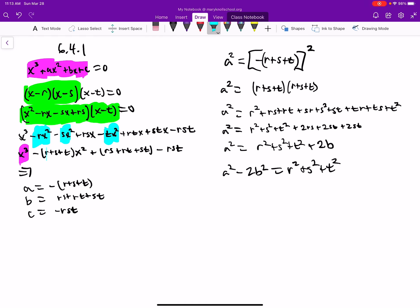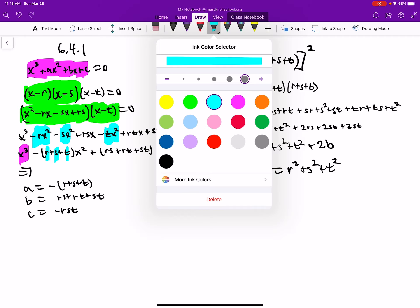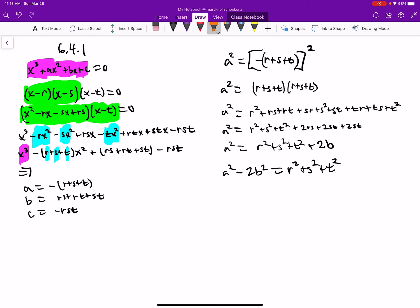So we have r. That's the first one. Then we have s and then the t. And then from there, just find all the degree ones. So the r, s, the r, t, and the s, t.